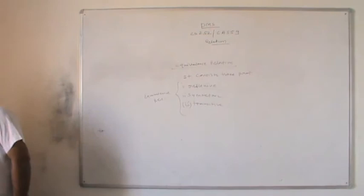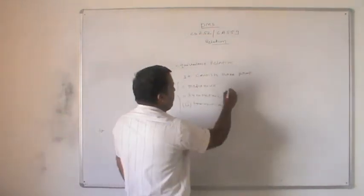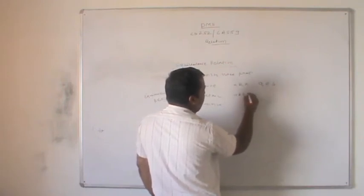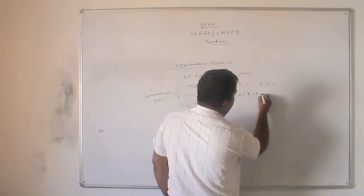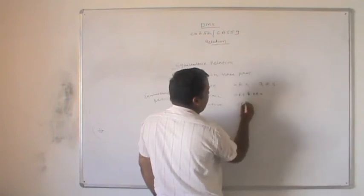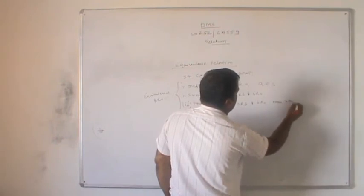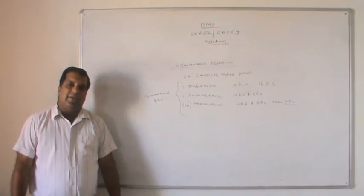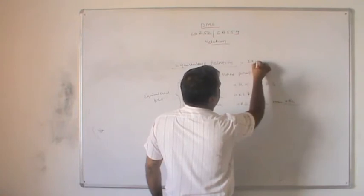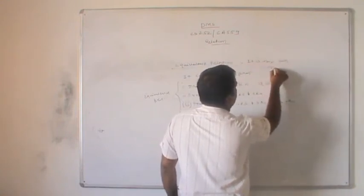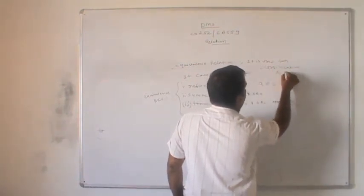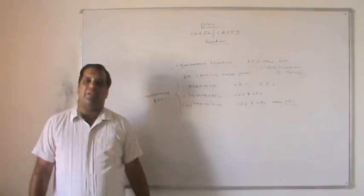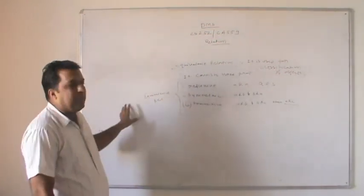In equivalence relation: A is related to A for every A in non-empty set S (reflexive); A related to B implies B related to A (symmetric); and A related to B and B related to C implies A related to C (transitive). When we want to find the classification of objects, we require the concept of equivalence relation. It is also used in the theory of computation for classification of objects.